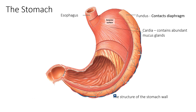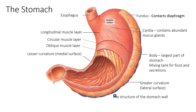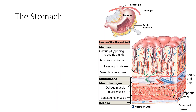Here you can see the parts of the stomach: the esophagus; the fundus, which contacts the diaphragm; the cardia, which contains abundant mucous glands; the longitudinal, circular and oblique muscle layers; the body, which is the largest part of the stomach and serves as a mixing tank for food and secretions; the lesser curvature (medial surface); and the greater curvature (lateral surface). You can also see the pyloric sphincter, pyloric canal and pyloric antrum, as well as the duodenum.